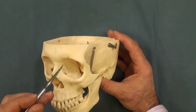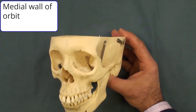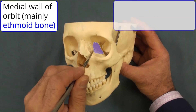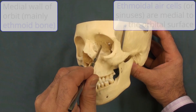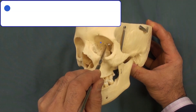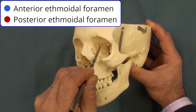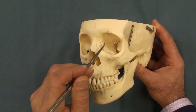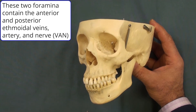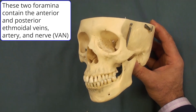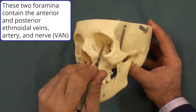The medial wall of the orbit is mainly made by the ethmoid bone, which contains the ethmoidal air cells. On this wall we can find two important bony landmarks: the anterior and posterior ethmoidal foramina. Through these openings pass the anterior and posterior ethmoidal vein, artery, and nerve.